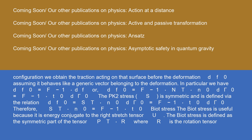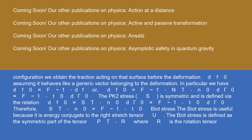The PK2 stress S is symmetric and is defined via the relation dF-zero equals S-transpose N-zero d-gamma-zero equals F-inverse T-zero d-gamma-zero, so S-transpose N-zero equals F-inverse T-zero. The Biot stress T is useful because it is energy conjugate to the right stretch tensor U. The Biot stress is defined as the symmetric part of the tensor P-transpose R, where R is the rotation tensor obtained from a polar decomposition of the deformation gradient. Therefore, the Biot stress tensor is defined as T equals one-half times (R-transpose P plus P-transpose R).